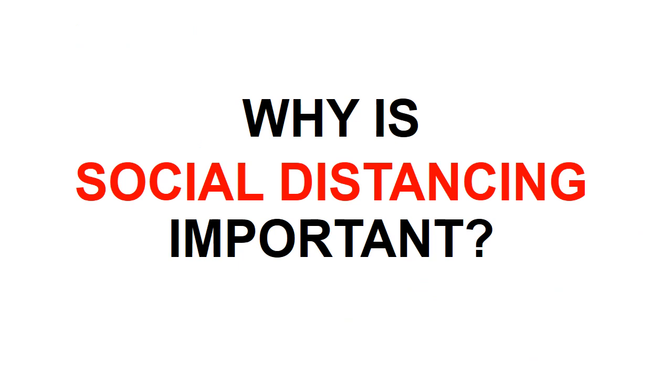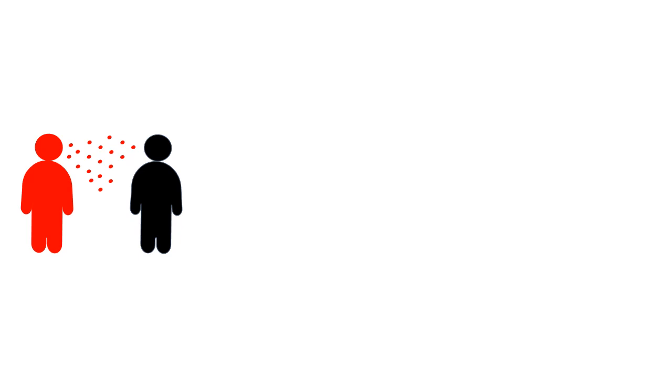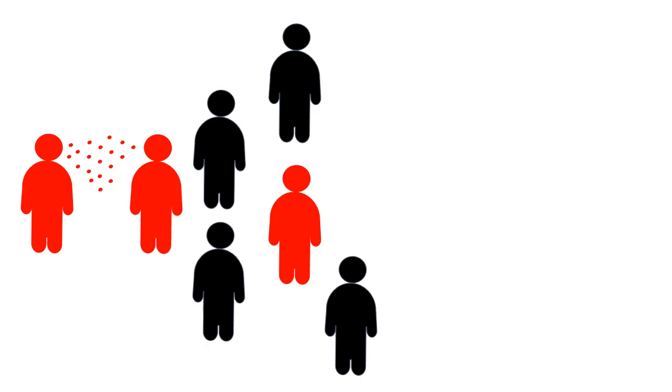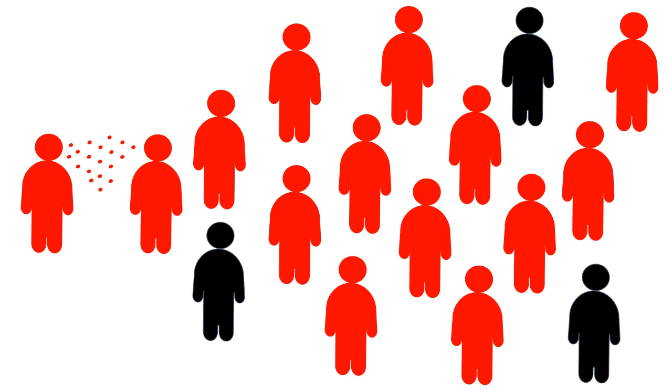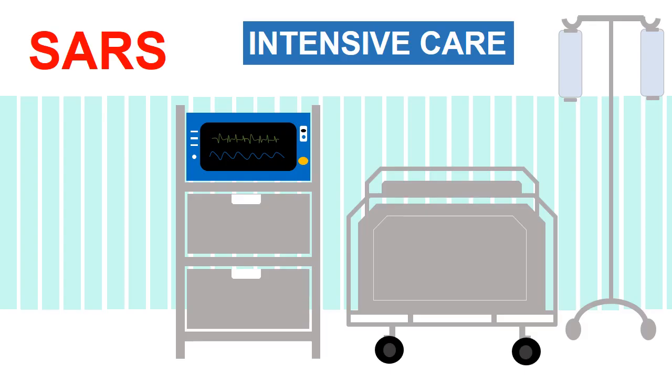If we don't respect the social distancing rules, a huge number of people will be infected, as the virus is extremely contagious. People can spread the virus before they know they are sick. Some will be asymptomatic, some will have mild symptoms, but some will develop severe forms of the disease with severe acute respiratory syndrome.